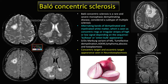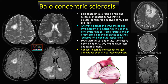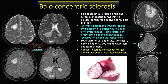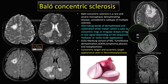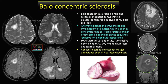This is a classical case of Balo's concentric sclerosis — a rare and severe monophasic demyelinating disease considered a subtype of multiple sclerosis. Alternating bands of demyelinating and myelinating white matter are seen, which mimic the bullseye or onion bulb appearance. Differential diagnoses include Marburg variant of MS, tumefactive demyelination, ADEM, lymphoma, abscess, and toxoplasmosis. In neurotoxoplasmosis, a concentric target and eccentric target sign are seen, which helps in differentiating neurotoxoplasmosis from Balo's concentric sclerosis.